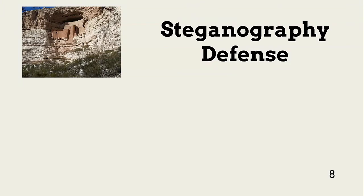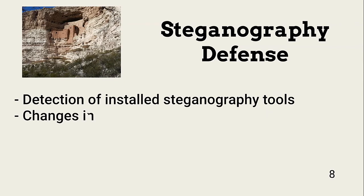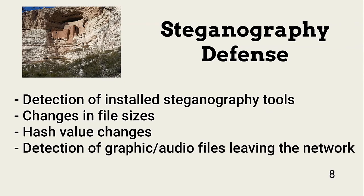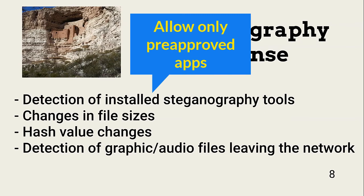Threat actors can hide information in audio, video, and graphics, and then extract the data without detection. This is also a great way for insiders to steal information. Many steganography tools also enable encryption of the hidden data that is protected with a password. One of the best ways to prevent this is to prohibit the installation of steganography tools. The best approach is prohibiting users from installing any application not on the approved app list. This also helps prevent the installation of any malware, including steganography.